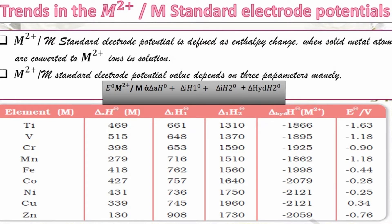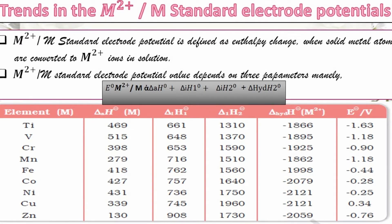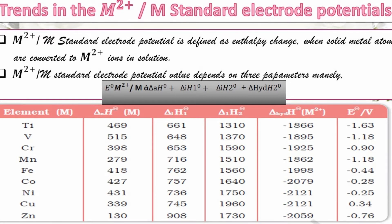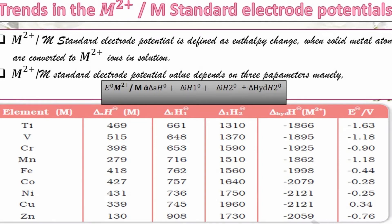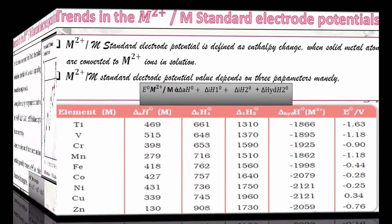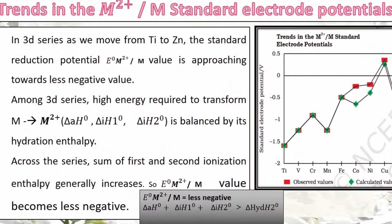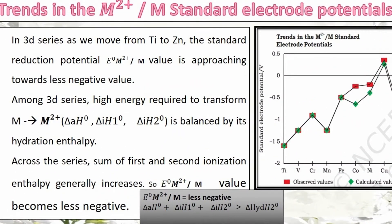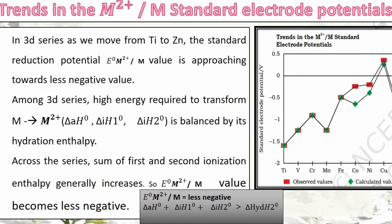After forming the metal 2+ ion, that ion gets solvated and some energy is released. That enthalpy change is called hydration enthalpy. So the E° value for M²⁺/M is the sum of enthalpy of atomization, first ionization enthalpy, second ionization enthalpy, and hydration enthalpy.